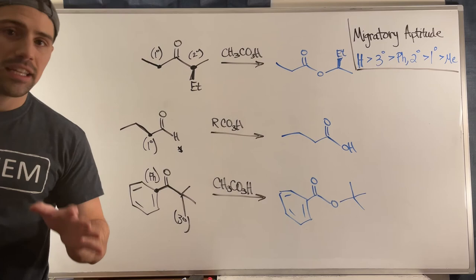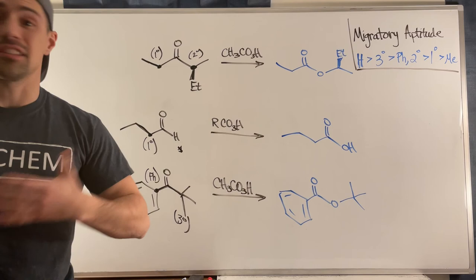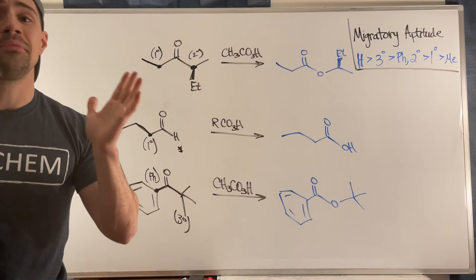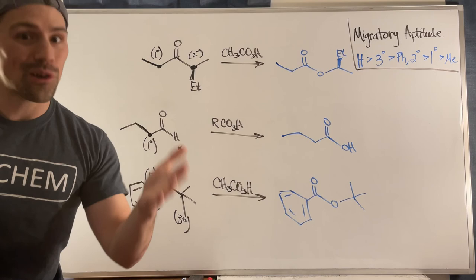Okay gang, if you had any confusion about the Baeyer-Villiger oxidation in terms of migratory aptitude, whether it affects stereochemistry, or the mechanism, I hope this cleared up your confusion. Make sure to check out this video, and if you're watching on YouTube, you're amazing — thank you. Make sure to check out my actual website because there are linked worksheets free with answers also for free. Thank you for watching, whether it's on YouTube or on JoeChem. You're the best, and I hope to see you all in the next video.